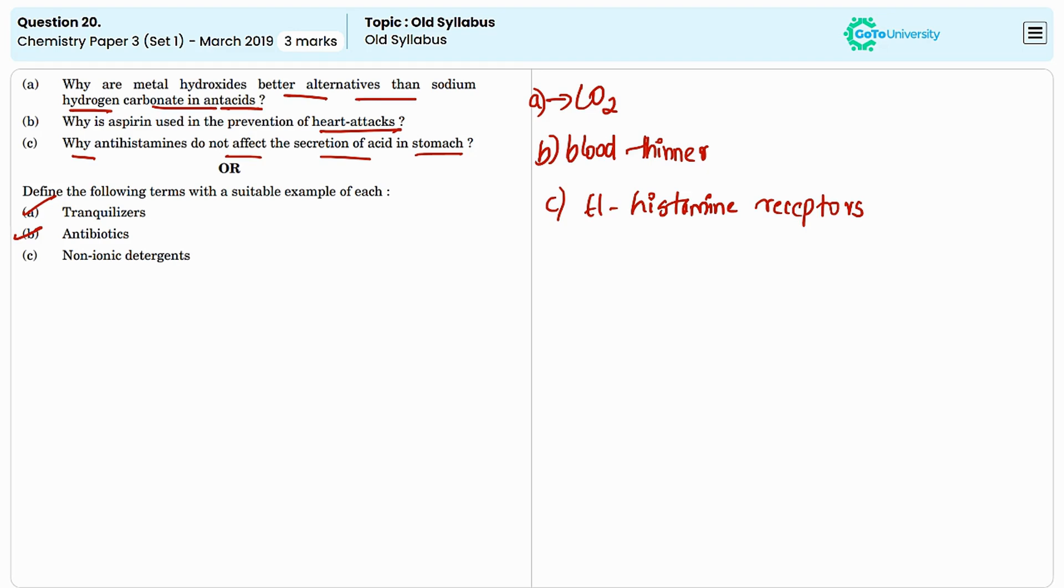They are used to treat bacterial infections. Broad-spectrum antibiotics affect a wide range of bacteria, while narrow-spectrum antibiotics target specific types of bacteria. Penicillin and amoxicillin are examples.